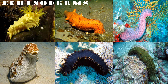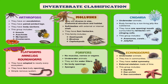Let's review. There are six main groups of invertebrates. Arthropods: they have an exoskeleton, paired jointed legs, and body sections. This group includes insects, arachnids, myriapods, and crustaceans.